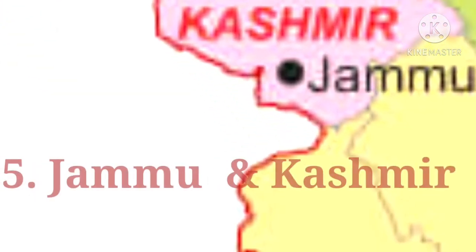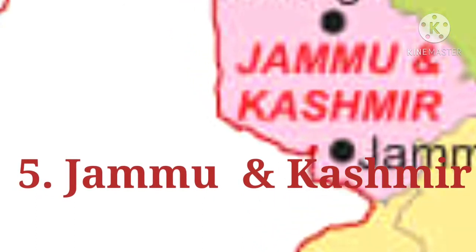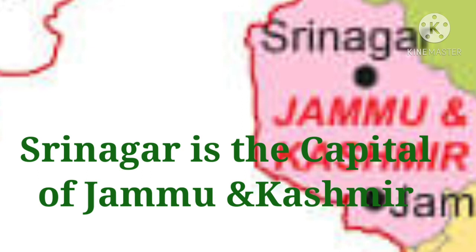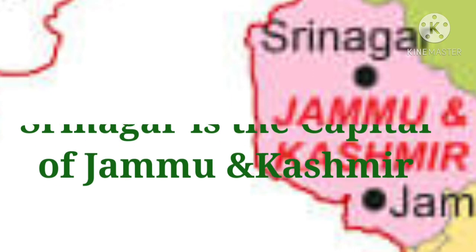The state Jammu and Kashmir is divided into two Union Territories: Jammu and Kashmir, and Ladakh. The Union Territory of Jammu and Kashmir has two capitals, Srinagar and Jammu. Srinagar is the summer capital and Jammu is the winter capital of this Union Territory. The land area of this Union Territory is approximately 2,22,236 km².